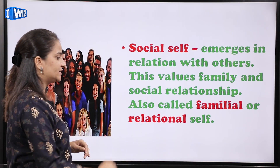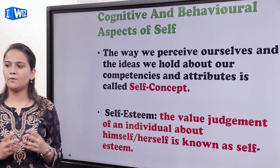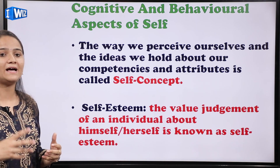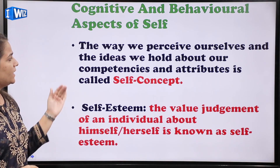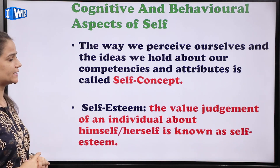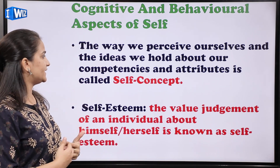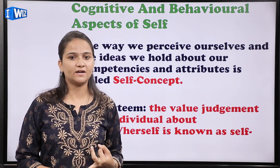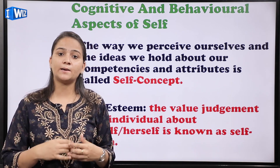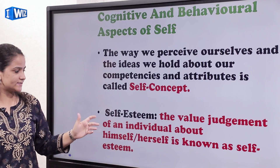Next topic है cognitive and behavioral aspects of self। The way we perceive ourselves and the ideas we hold about our competencies and attributes is called self-concept। यानि मेरी अपने बारे में सोच — जो मुझे लगता है, मेरे अपने ideas हैं अपनी competencies या attributes के बारे में। जैसे मुझे लगता है I am capable of dancing, या I have introvert traits, या I am a very good speaker — so these are my competencies and attributes that define me as a person।